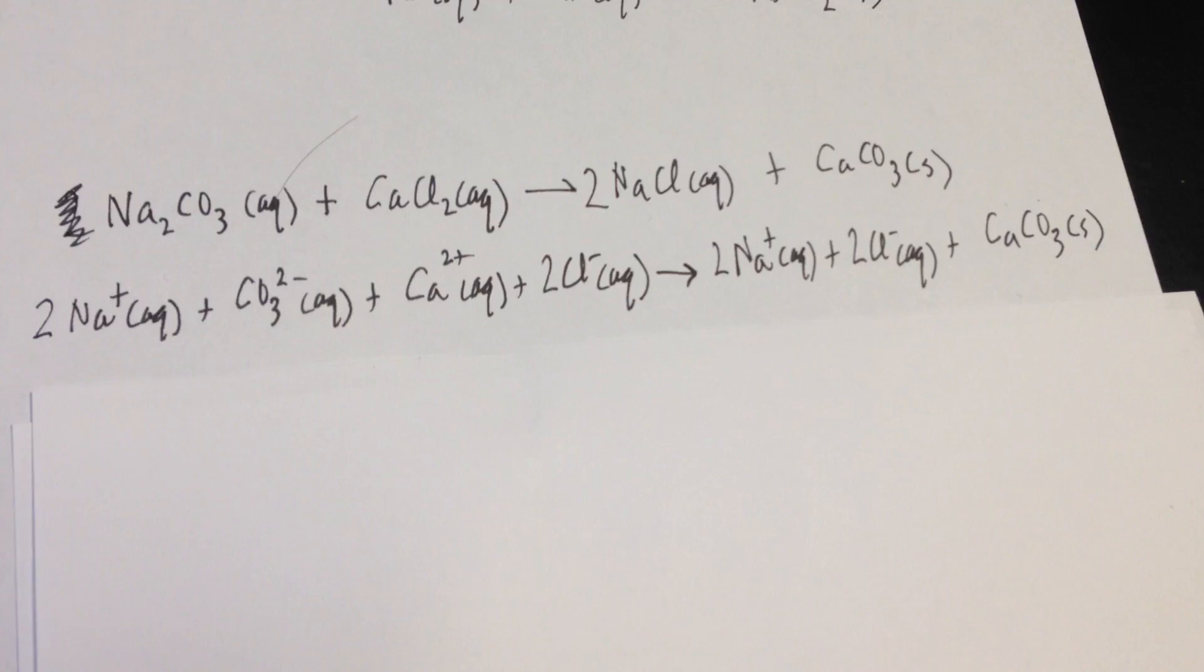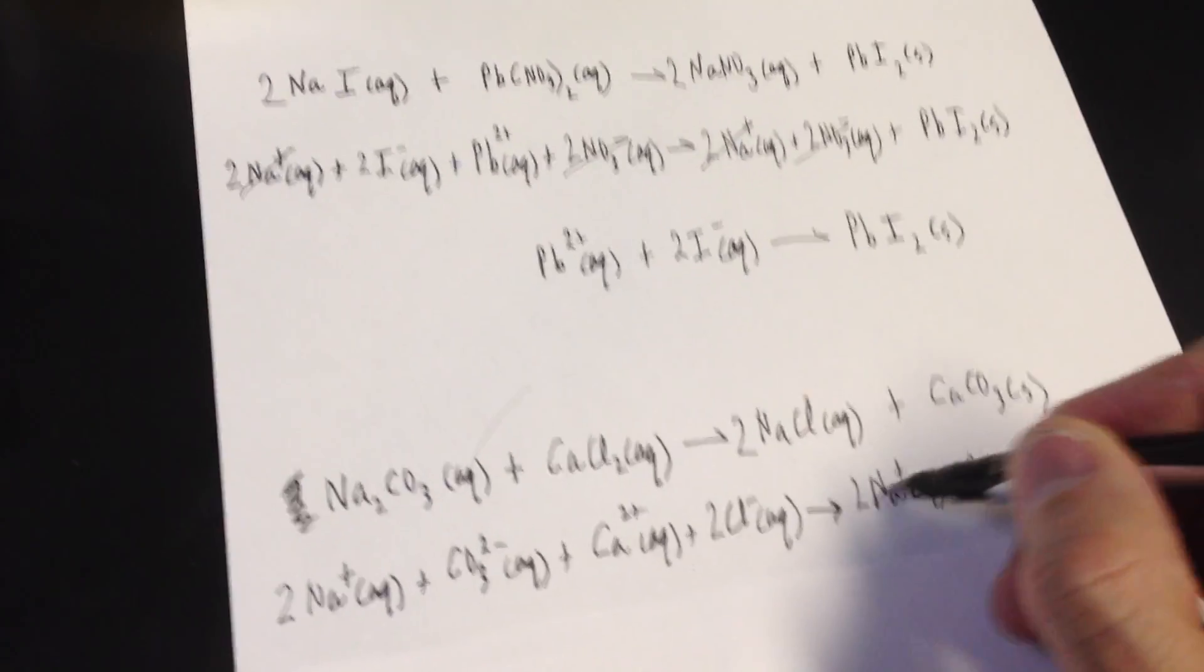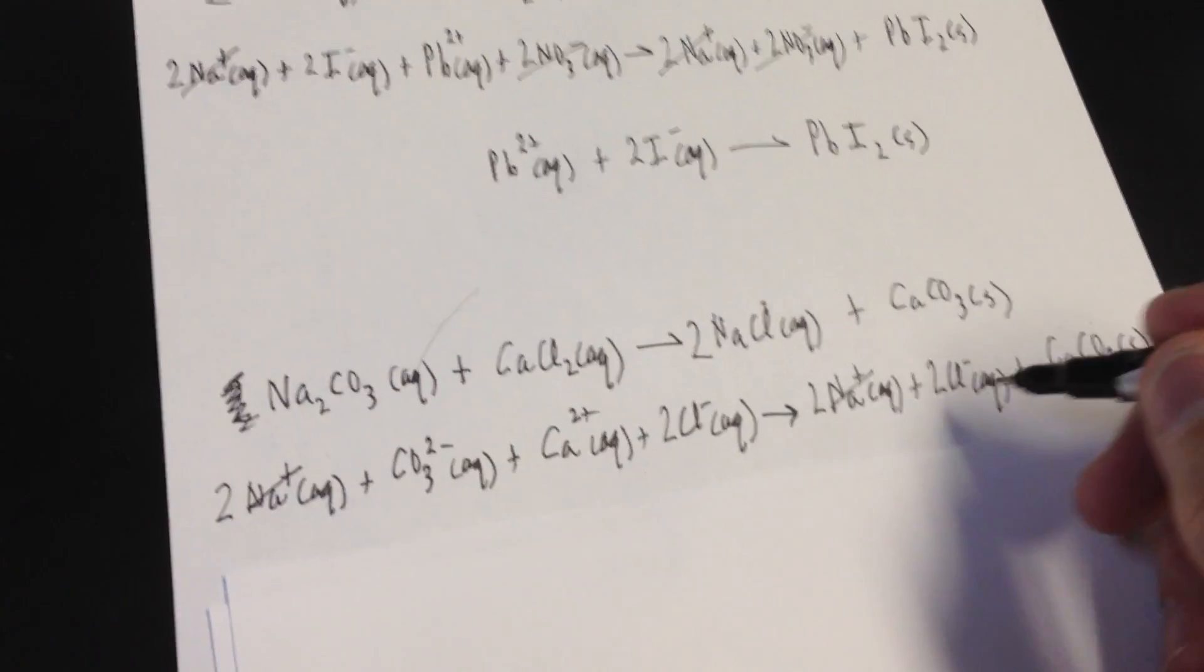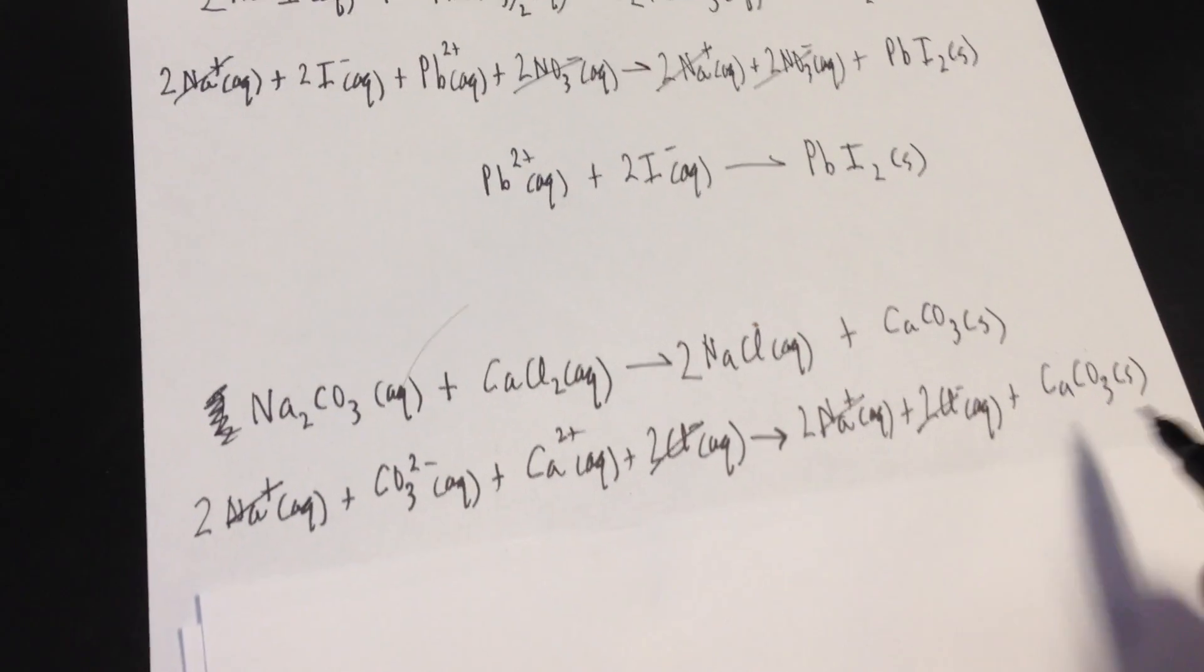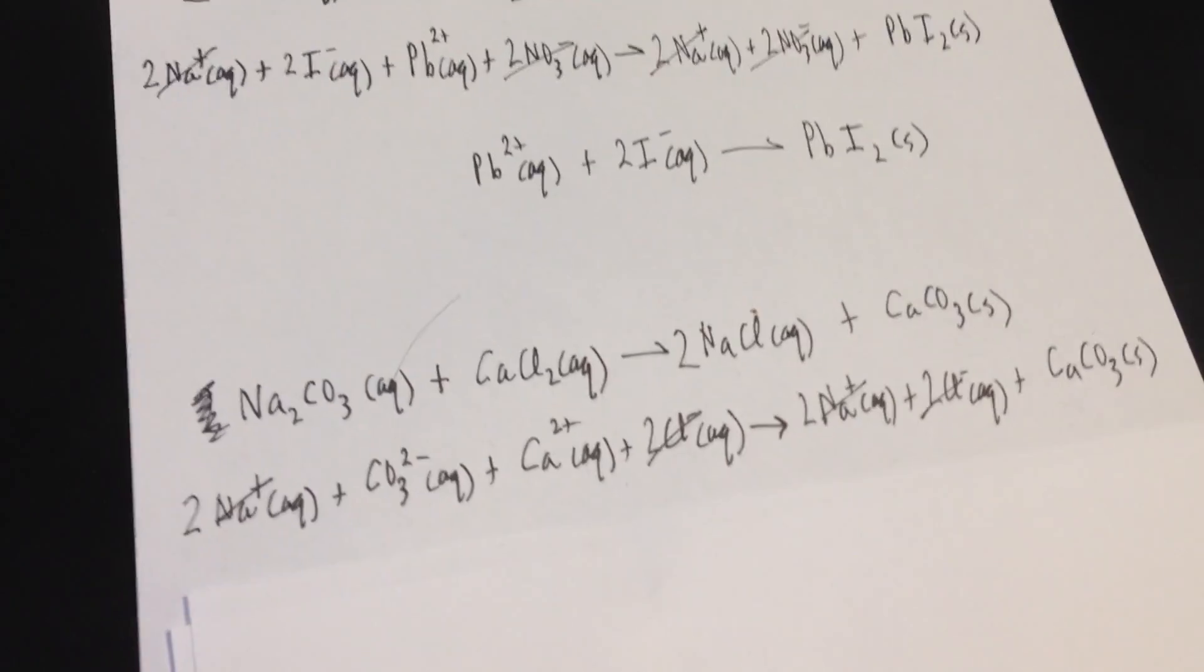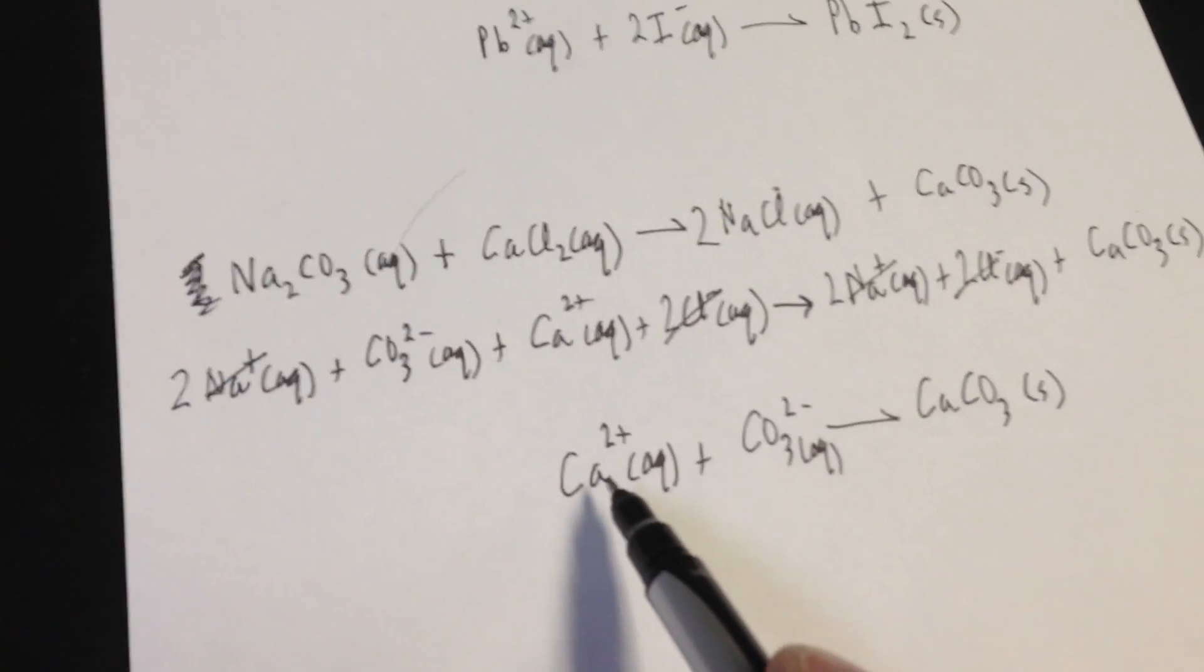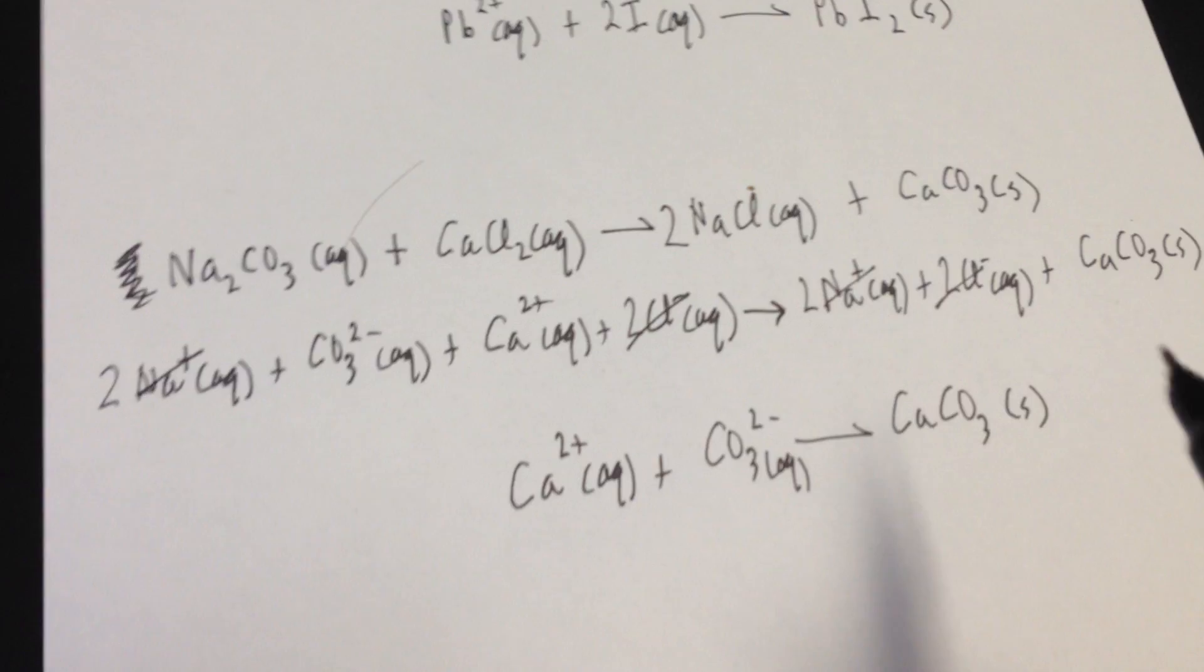So let's cross off our spectators again. And it looks like sodium is the same on both sides. And what else is the same? Good job. The two chlorides are the same on both sides. The calcium and carbonates are stuck together on the other side. So we write whatever's left over. And you'll notice I like to write the positive ion first, just out of habit. And then my negative ion with my solid afterwards.